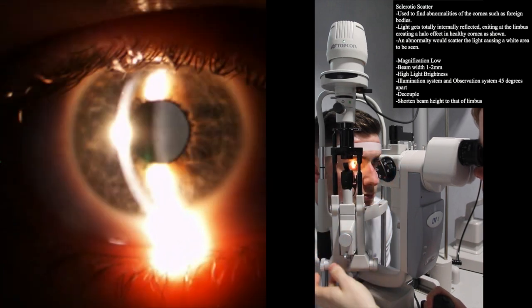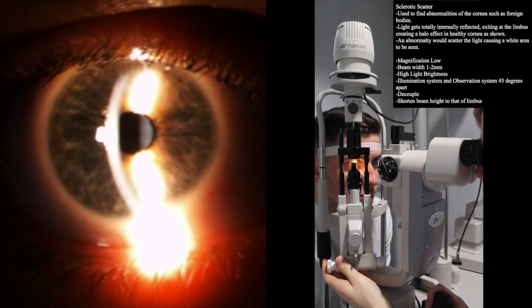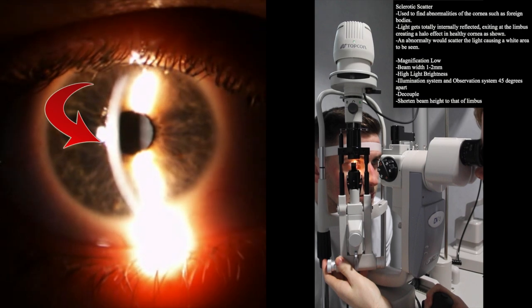Place the beam on the center of the cornea, then move the joystick until the tear debris is in focus. We then need to decouple the slit lamp.